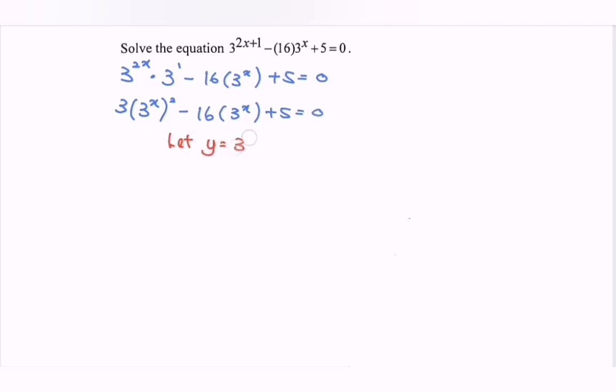Let y equal 3 to the power of x. So we have 3y squared minus 16y plus 5 equals 0.